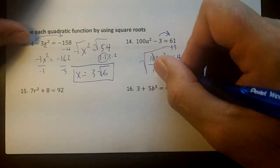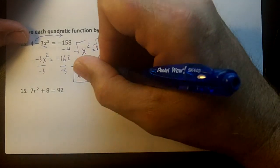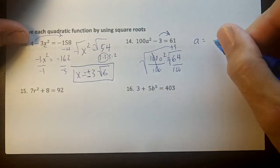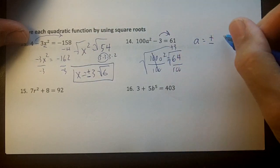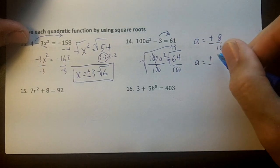Then square root this, the 100s cross out. So I'm going to get a equals, and this is plus or minus, remember, plus or minus 8 over 10, and the 8 over 10 will simplify to 4 over 5, won't it?